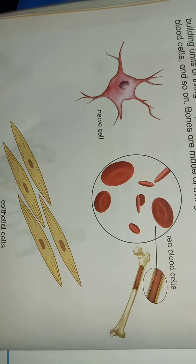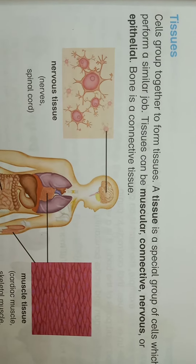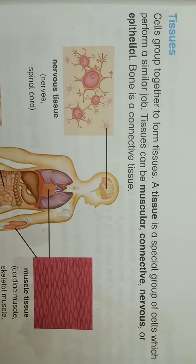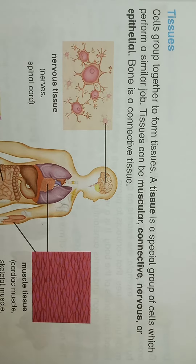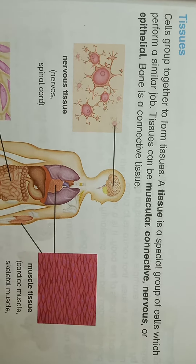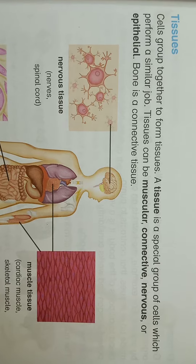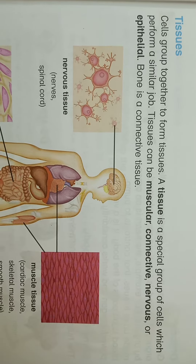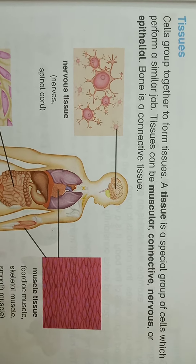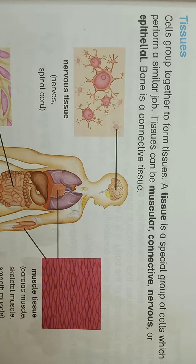Our second topic is tissues. Tissues are formed when cells perform the same function. There are different types of tissues: muscular tissue, connective tissue, and nervous and epithelial tissue.